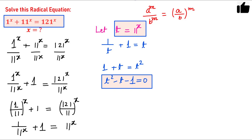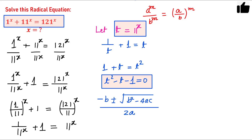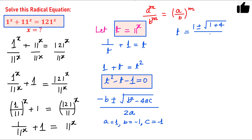For quadratic equations, the roots are given by the formula: t equals minus b plus or minus square root of (b squared minus 4ac), all divided by 2a. In this problem, a equals 1, b equals minus 1, and c equals minus 1. So t equals (1 plus or minus square root of (1 plus 4)) divided by 2.